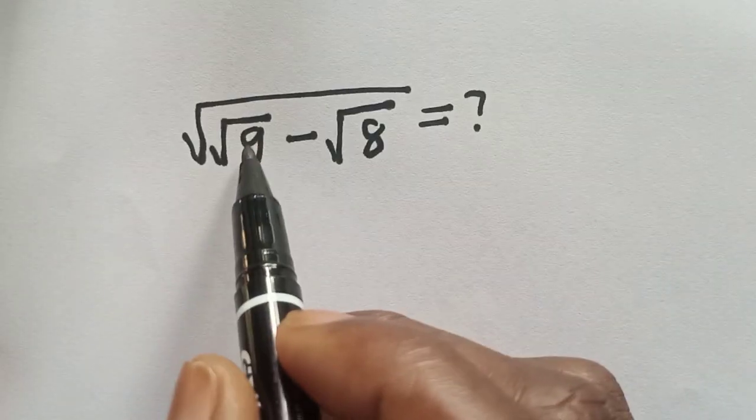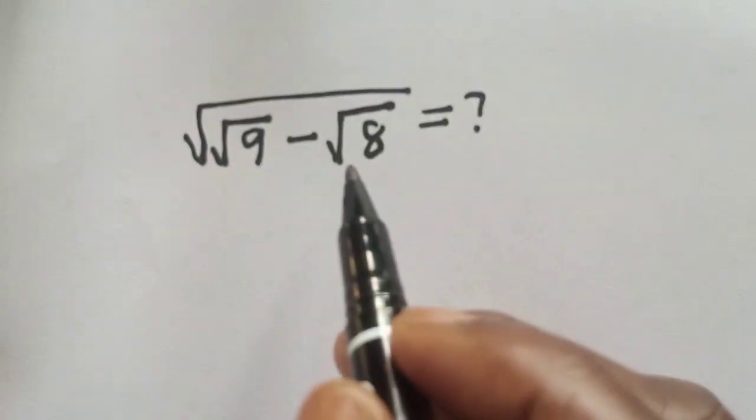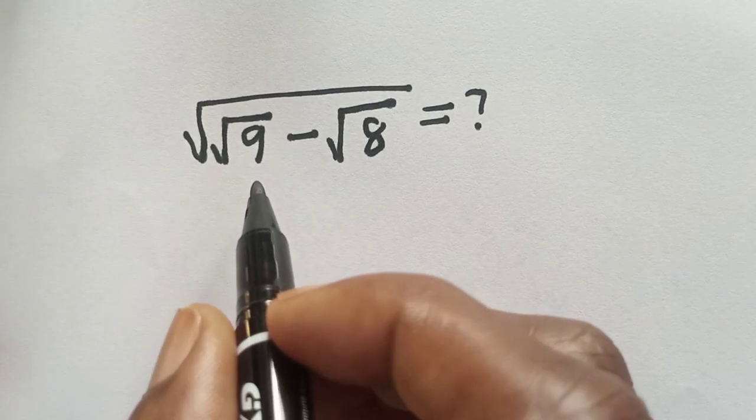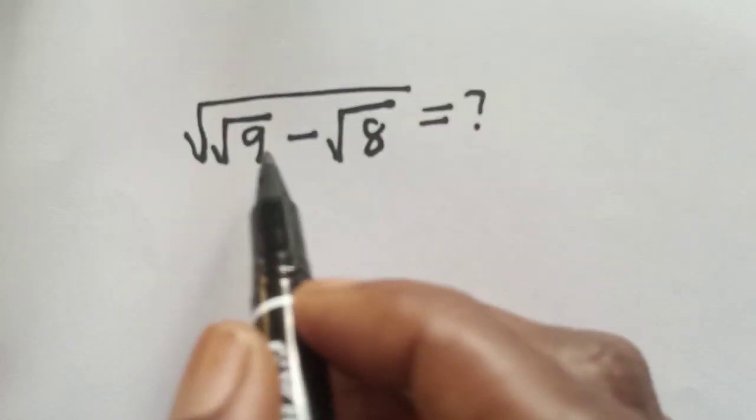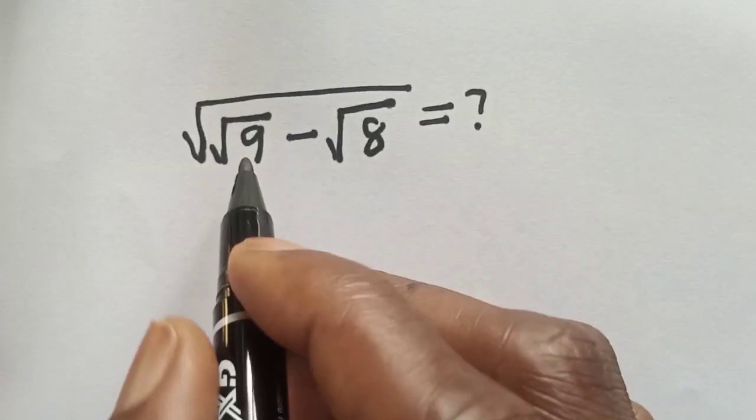Square root of root 9 minus root 8 is equal to what? Hi everyone, welcome to my class. In this class I want to simplify this nice radical problem, but before we proceed please don't forget to like, share, comment and subscribe.